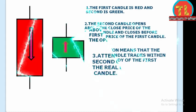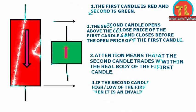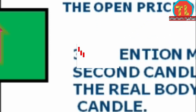This means the second candle trades within the real body of the first candle. If the second candle cuts the high and low of the first candle, then it's an invalid pattern. This candlestick pattern forms at the bottom of a downtrend.